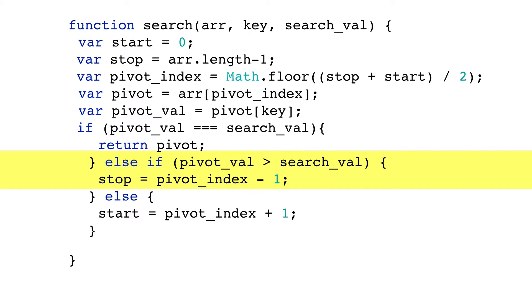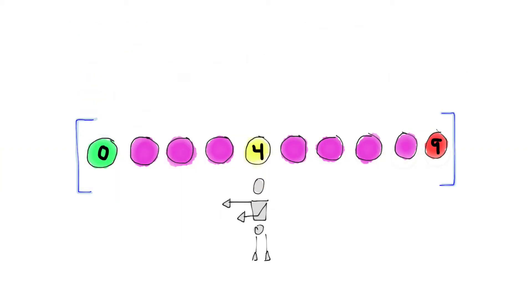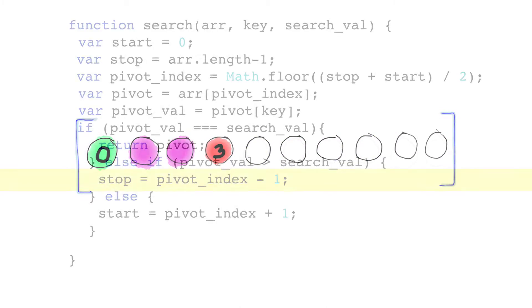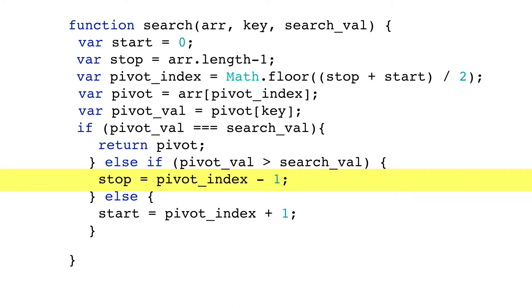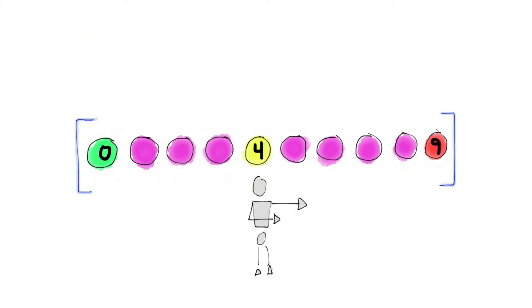If it is, you know the search term will be here. So the new stop index will be the pivot index minus 1. If the pivot value is smaller than the search value, we look to the right of the pivot index. So the new start index is the pivot index plus 1.